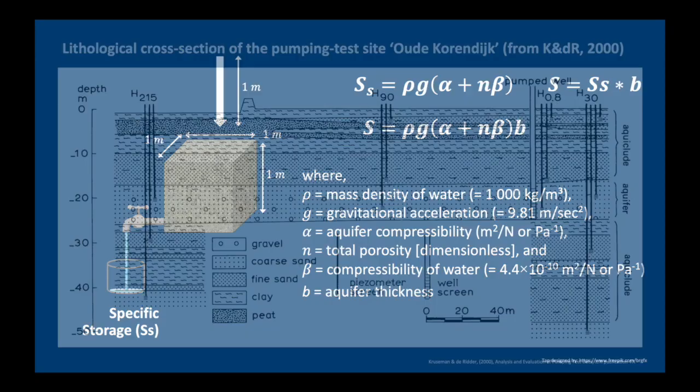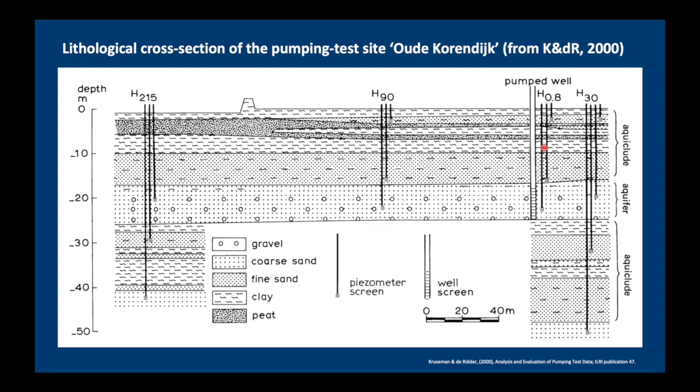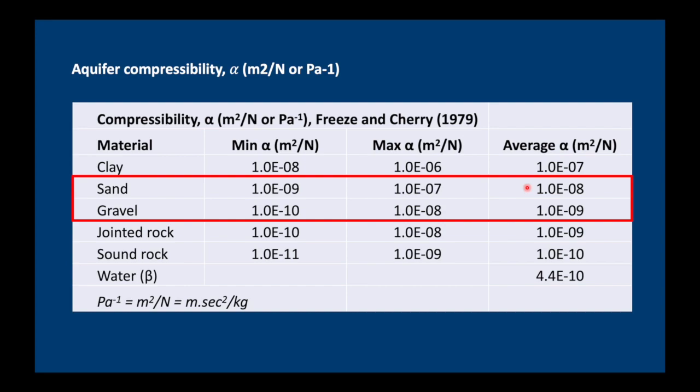Let's illustrate it with a practical example. This is taken from Kruseman and de Ridder, the Oude Korendijk pumping test, and they have an aquifer thickness of 7 meters. This aquifer is made up of coarse sand with a bit of gravel. If we look at Freeze and Cherry, we can see that the alpha values for sand and gravel is somewhere between 10 to the minus 7 to 10 to the minus 10. The average is 10 to the minus 8, maybe 10 to the minus 9. Anyway, we're going to pick one of these. Let's pick 10 to the minus 8, which is kind of the middle range for sand.